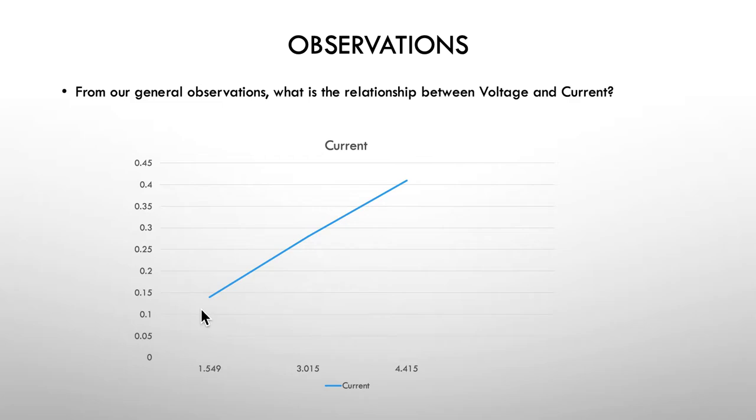From our general observations, what is the relationship between voltage and current? I keep emphasizing this because the relationship between voltage and current is directly proportional. Directly proportional. If voltage goes up, current must follow. If voltage goes down, current must follow. They are intrinsically connected together in this directly proportional relationship.